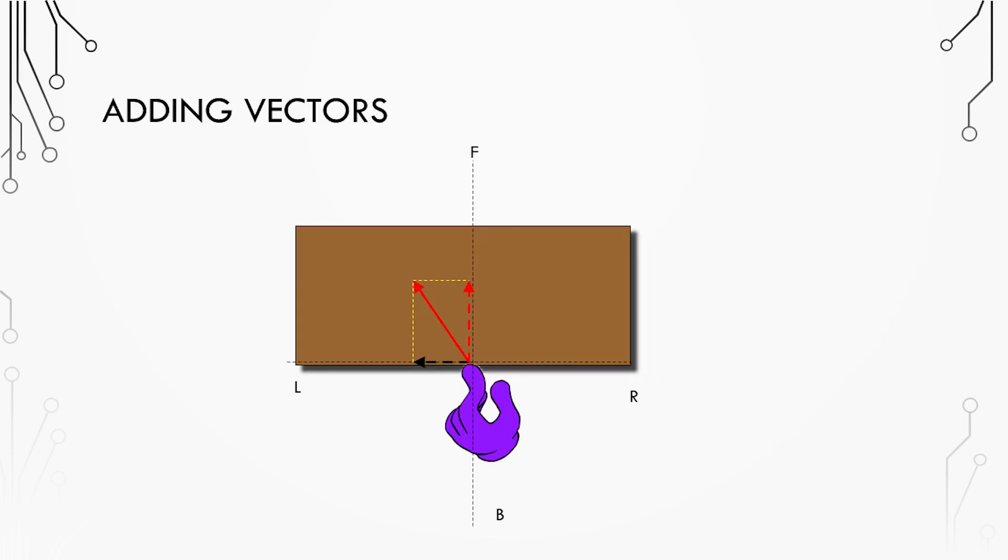We do the same thing with the forward component again starting from the initial point of force application and extending up to the tip of the initial force vector. Now to add these two components together you can use the tip to tail method. This means slide the forward component over along the left axis so that the origin of the forward component starts at the tip of the left component. You should now see that the addition of the left and forward component vectors equals the sum of the initial or resultant force vector.